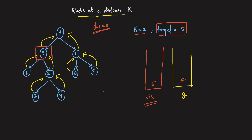We take node 5 from the queue. The upward node is 3, the left child is 6, and the right child is 2. All three are at a distance of 1. We linearly increment the distance to 1 as we move radially outward. The order can be anything — parent, left, right. When we take these nodes, we mark them in our visited array: visited node 3, visited node 6, visited node 2.